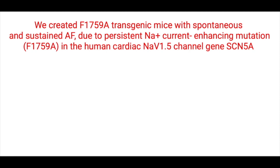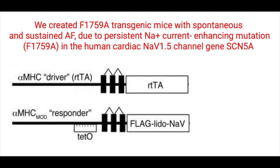The murine model that we used to study atrial fibrillation was generated by crossing mice with flag-tagged F1759A human SCN5A mutation fused to a modified murine alpha-myosin heavy chain tetracycline-inducible promoter vector, and mice with a cardiac-specific expression of reverse tetracycline-controlled transactivator protein. The F1759A mutation was included in order to confer lidocaine resistance. Without doxycycline, the double transgenic mice developed structural alterations, including atrial and ventricular enlargement, myofibril disarray, fibrosis.